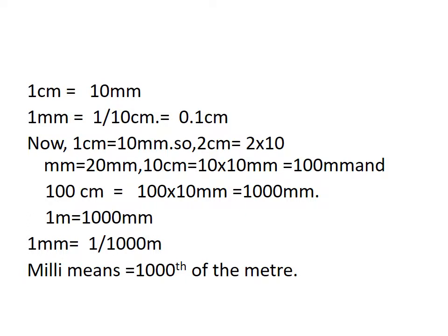One centimeter is equal to ten millimeters. The denominator is ten. Now, one centimeter is equal to ten millimeters, so two centimeters is equal to two multiplied by ten.